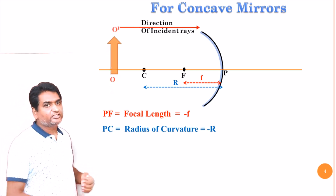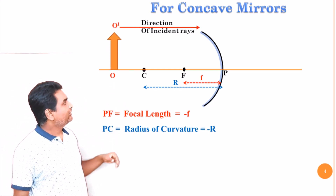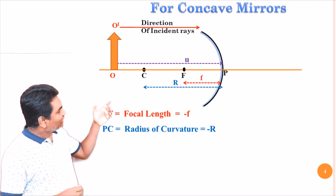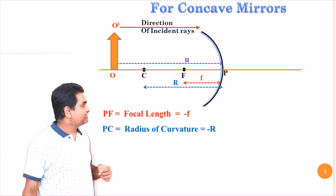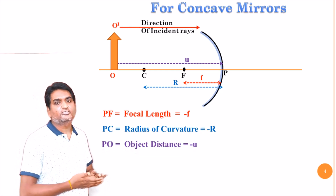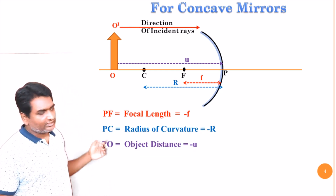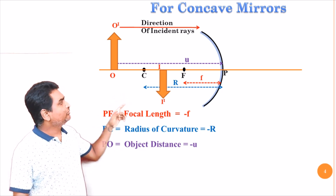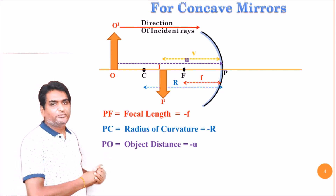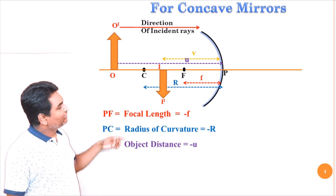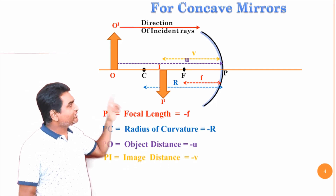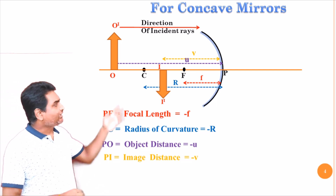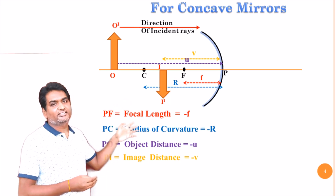Let us consider an object O O-dash and let U be the object distance, that is the distance from the pole to object. The object distance is also measured against the direction of the incident ray, so object distance is also minus U. Let us say the image is found here — I I-dash is the image. The distance from the pole to image point is called image distance. This image distance is also measured against the direction of the incident ray, so I have taken it as minus V. In concave mirror, for this case, all the distances are negative.